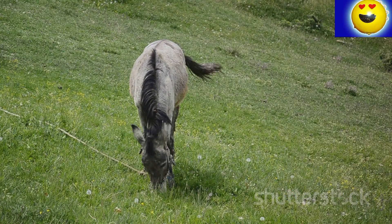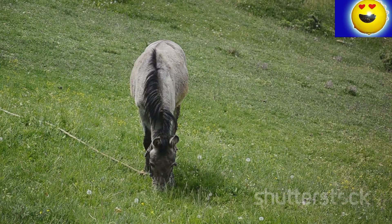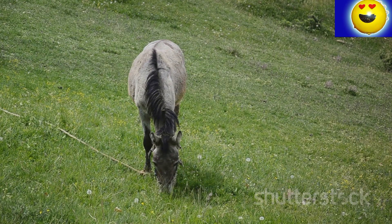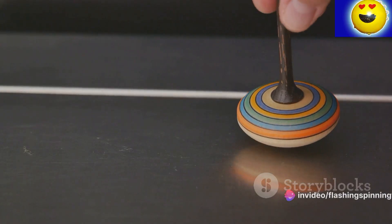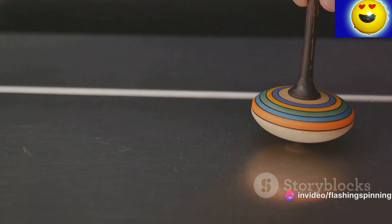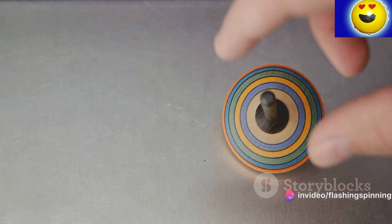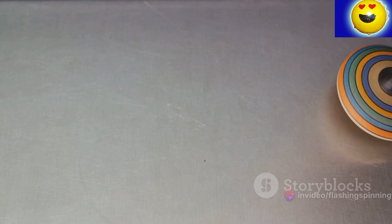Now picture this invisible force as a stubborn mule. It resists any change to its path. Gravity, however, is a relentless force. It's constantly trying to pull the top down to make it fall. But our stubborn mule, the angular momentum, resists this change.